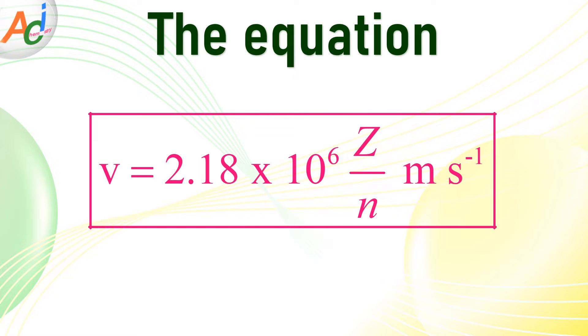Without wasting time, now let us see the formula that will enable us to determine the velocity of an electron. This is the formula where the velocity v is given by 2.18 × 10^6 Z divided by n meter per second.